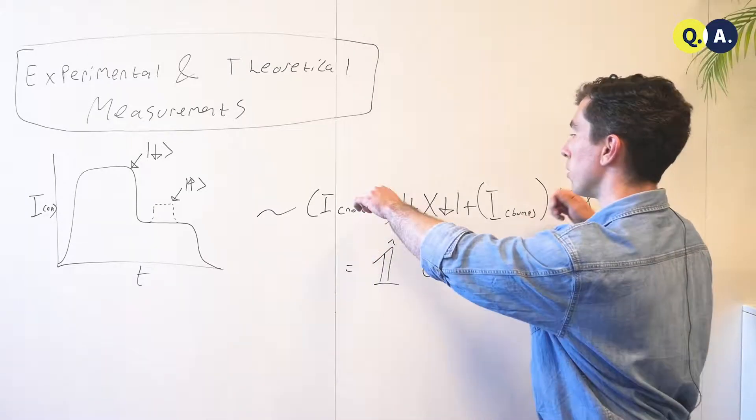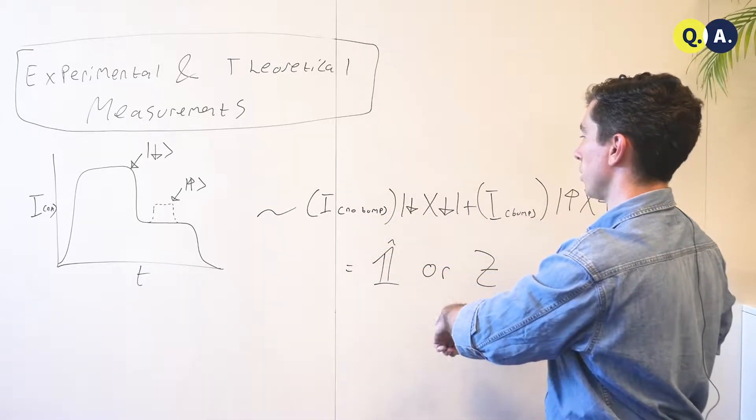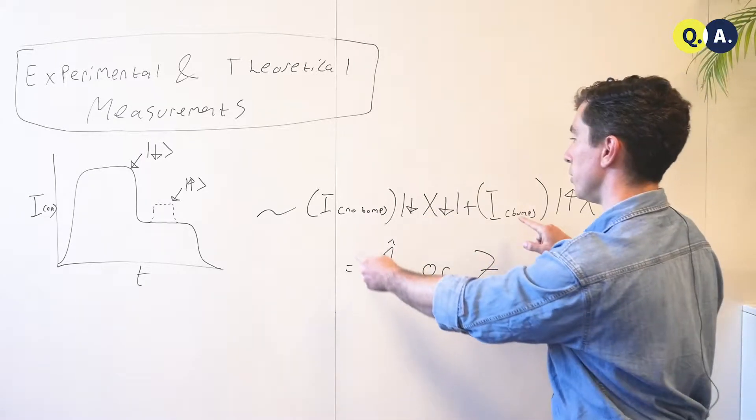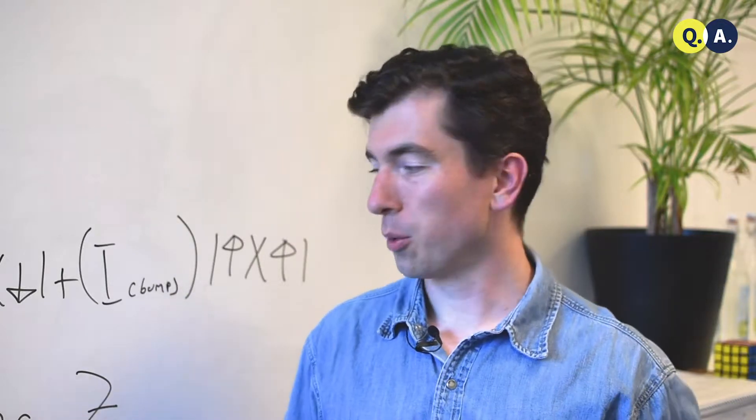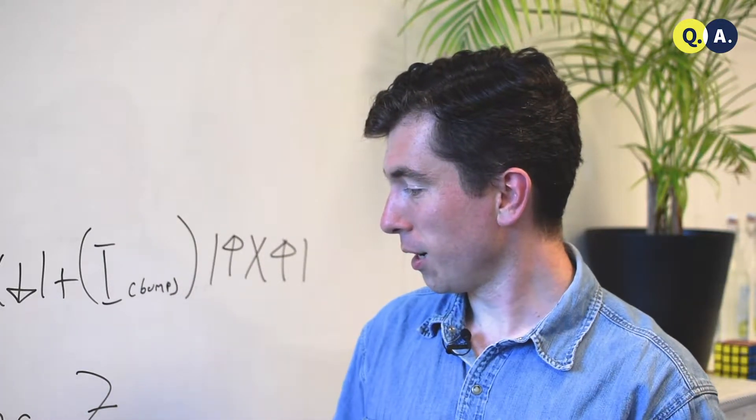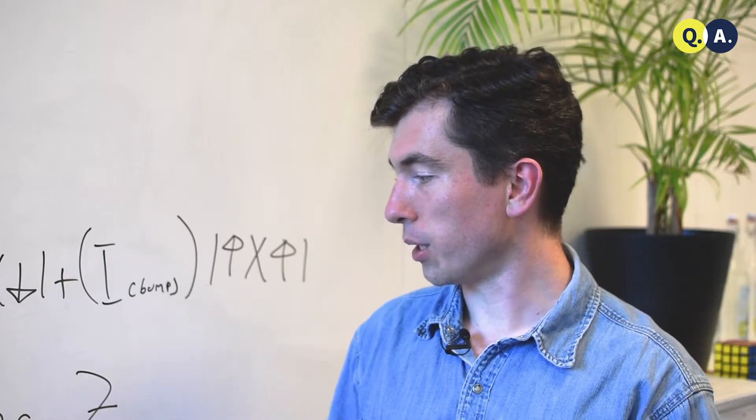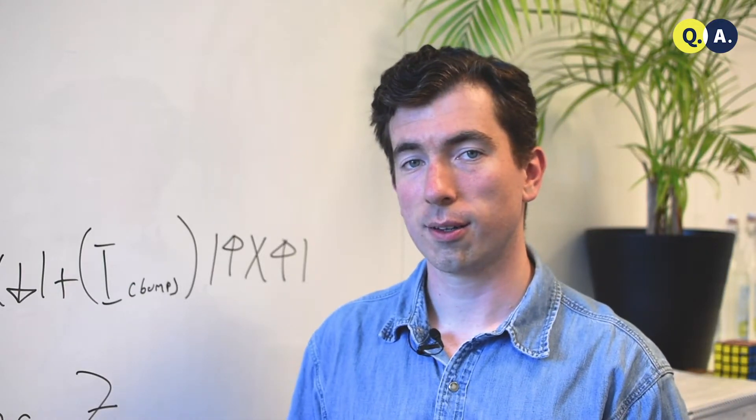But if these numbers are discernibly different, then down down and up up receive different measurement outcomes, and our measurement operator is more like a z, which is one that we can use to accurately distinguish between the computational basis states in quantum computing.